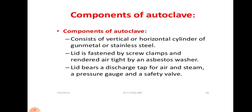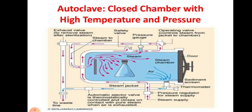Components of the autoclave: it consists of a vertical or horizontal cylinder of gunmetal or stainless steel. The lid is fastened by screw clamps and rendered airtight by an asbestos washer. The lid bears a discharge tap for air and steam, a pressure gauge and a safety valve. Here in the picture, you can see the lid at one end, the stainless steel chamber in which we keep all our media for sterilization, a pressure regulator for steam supply, a thermometer for checking the temperature, a pressure gauge, safety valve and exhaust valve to remove the steam after sterilization.